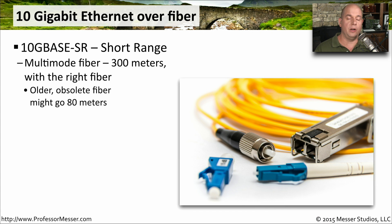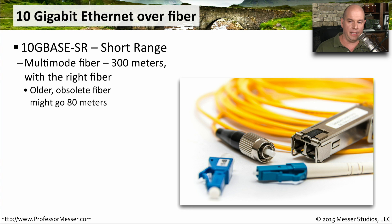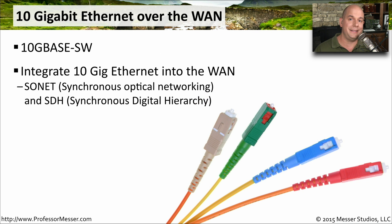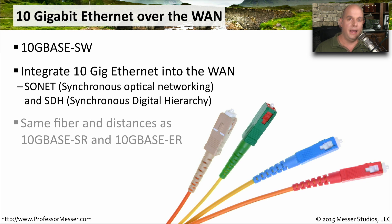You can also run 10 Gigabit Ethernet over fiber. The 10GBaseSR standard — SR standing for short range — gives us 10 Gigabit Ethernet over multimode fiber, with most types allowing 300 meters in length, though older fiber may only reach 80 meters. For longer distances, the 10GBaseER standard — ER standing for extended range — allows multimode fiber runs up to 40 kilometers. There is also a 10GBaseSW standard that integrates 10 Gigabit Ethernet within existing SONET or SDH networks, using the same fiber and distance limitations as the short range and extended range standards.